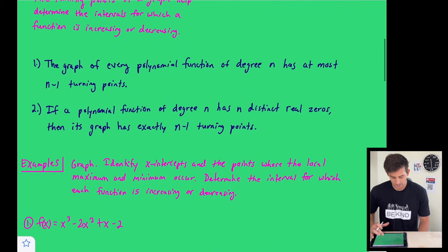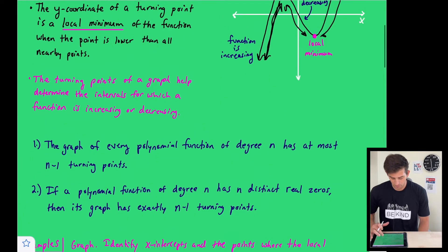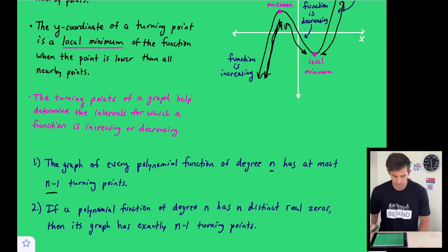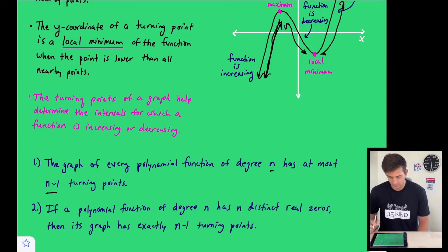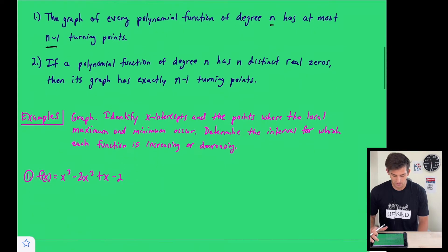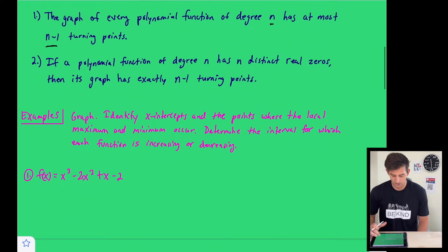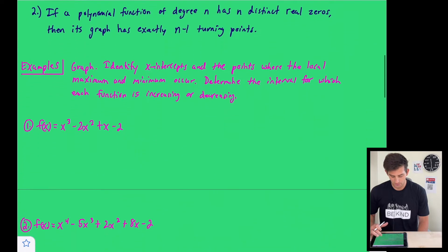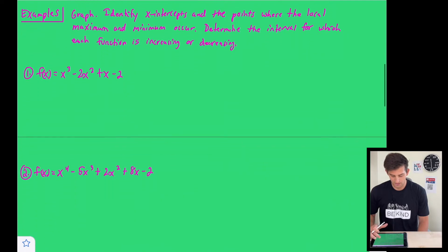A couple of key rules: the graph of every polynomial function of degree n has at most n minus one turning points. Also, if a polynomial function of degree n has n distinct real zeros, then its graph has exactly n minus one turning points. We can use these two pieces of information along with what we've covered to help with the examples.